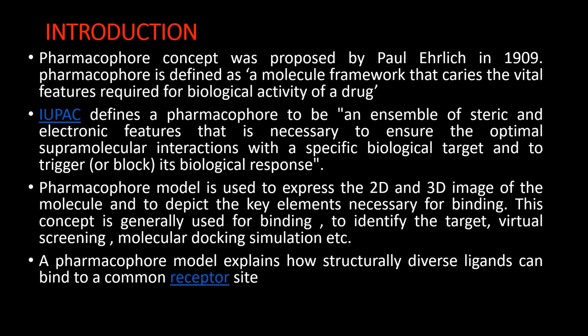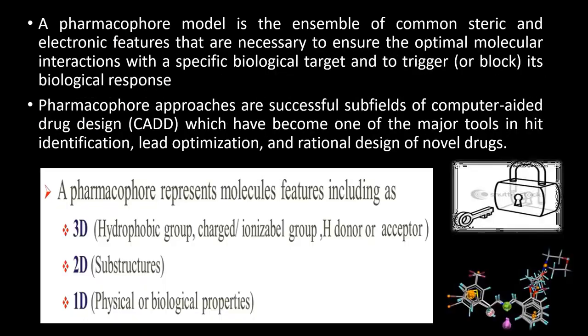The pharmacophore model explains how structurally diverse ligands can bind to a common receptor site — this is a very important point. The pharmacophore model is an ensemble of common steric and electronic features that are necessary to ensure the optimal molecular interaction with a specific biological target and to trigger or block its biological response.